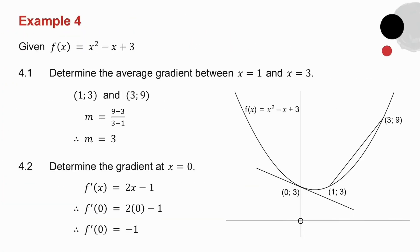So to get the average gradient between x equals 1 and x equals 3, it means I want the gradient of the straight line joining x equals 1 and x equals 3. So what I've got is as follows. When x is 1, y is 3. When x is 3, y is 9.